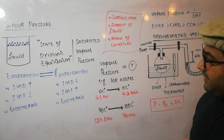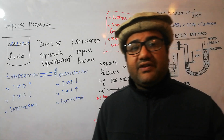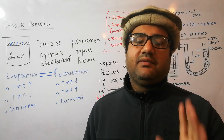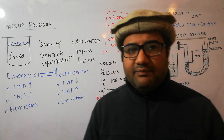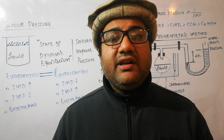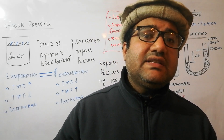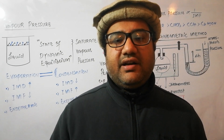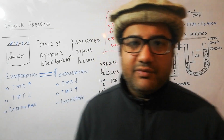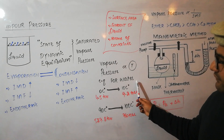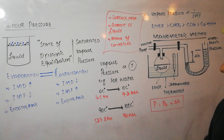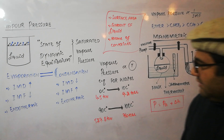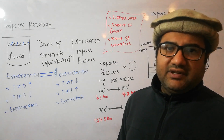The most important factor affecting vapor pressure is temperature. Vapor pressure is directly proportional to temperature. When you increase temperature, kinetic energy of molecules increases, which favors evaporation, so vapor pressure increases. For example, the vapor pressure of water at 0°C is 4.5 torr, and at 10°C it is 9.2 torr — an increase of about 4.7 torr.